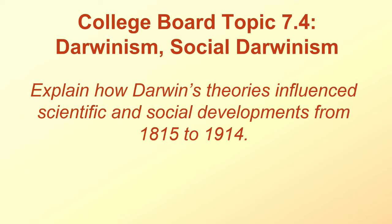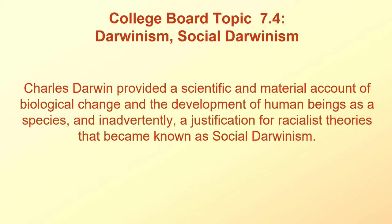College Board Topic 7.4: Darwinism and Social Darwinism. Explain how Darwin's theories influenced scientific and social developments from 1815 to 1914. Charles Darwin provided a scientific and material account of biological change and the development of human beings as a species, and, inadvertently, a justification for racialist theories that became known as Social Darwinism.